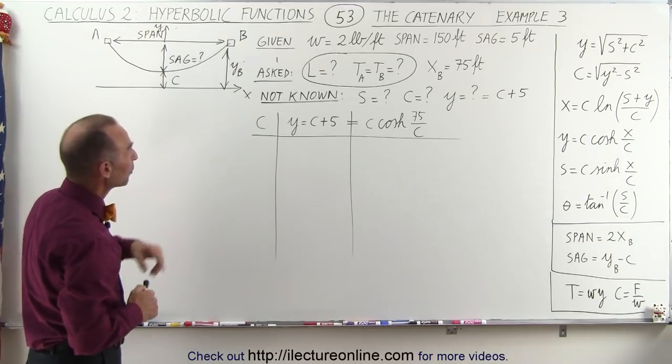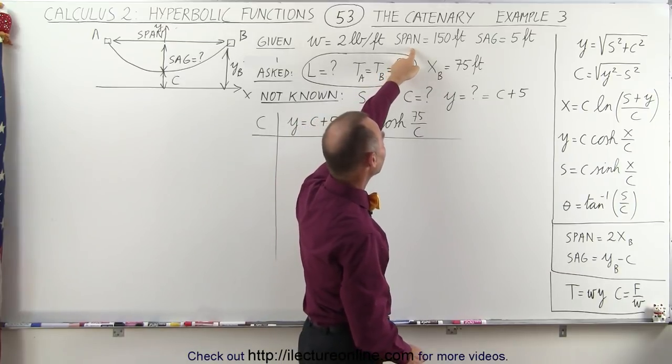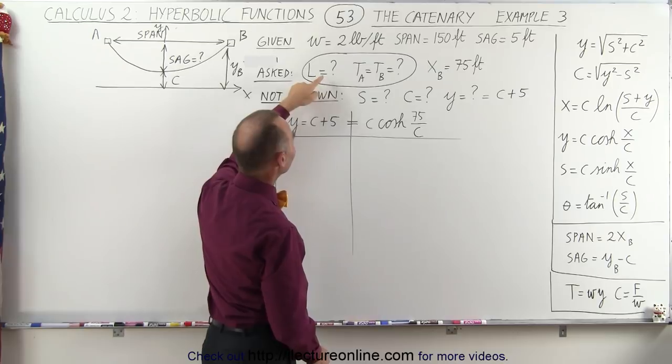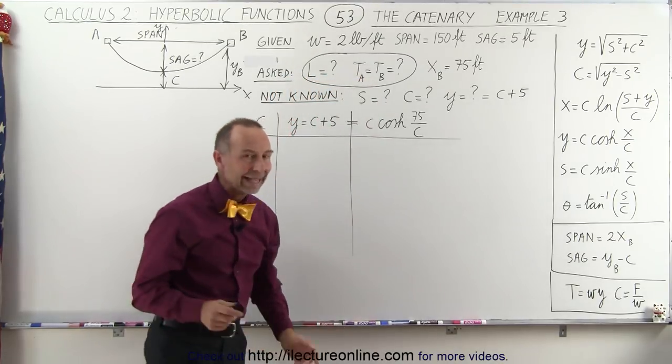In this particular problem we're given the weight per unit length, two pounds per foot, we're given the total span, and we're given the sag. What we're being asked to find is the length of the cable between the two supports and the tension at the end of the cable.